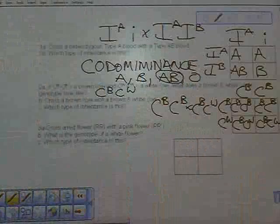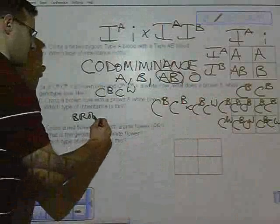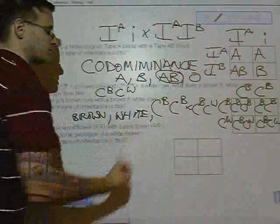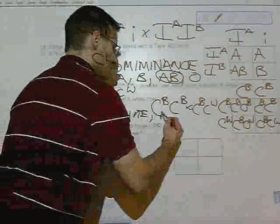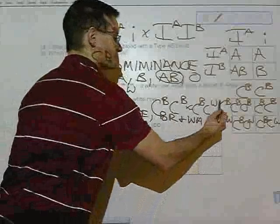The type of inheritance here is also co-dominant because you have brown, white, and our third genotype or phenotype I should say is brown and white, represented by this genotype right here, C^B C^W.